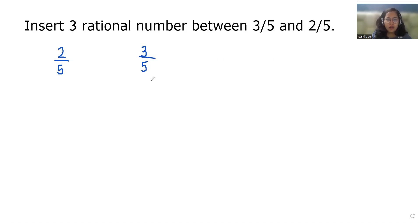If the denominators are different, we are going to make them the same, but they're already same. So what we are going to do, if we have to insert three numbers, we have to multiply a number greater than 3, that is 3 plus 1. So 3 plus 1 is 4. So to get 4, I am going to multiply it with 4 in numerator and denominator in both the numbers.